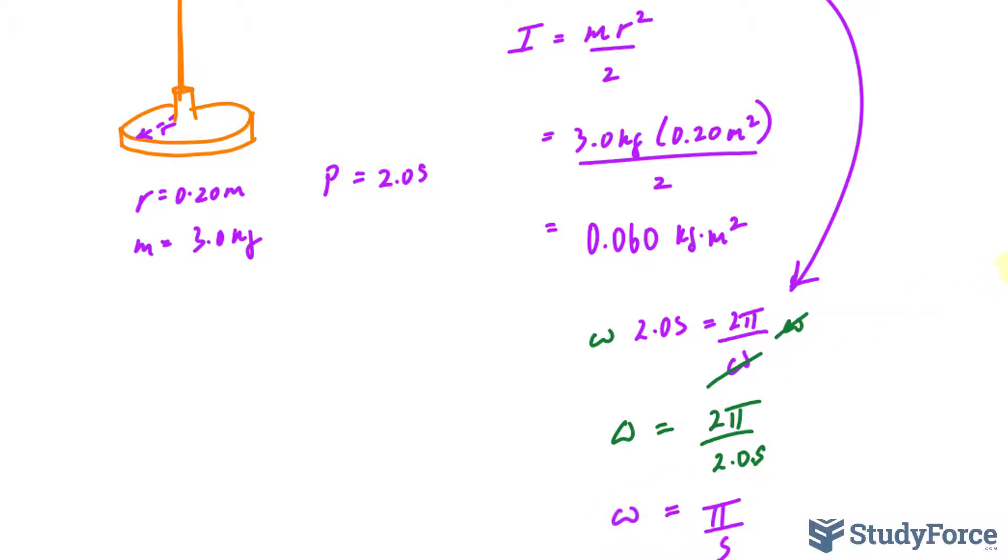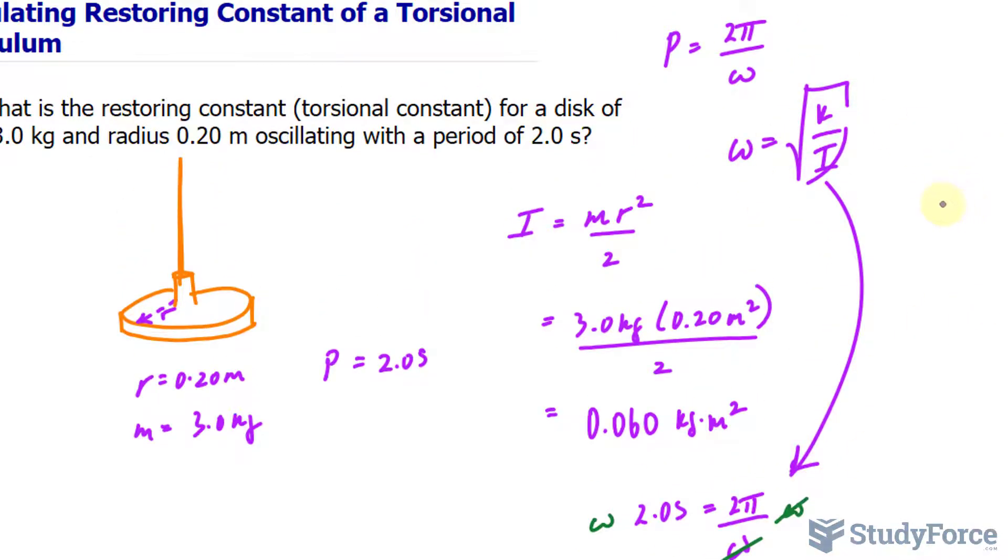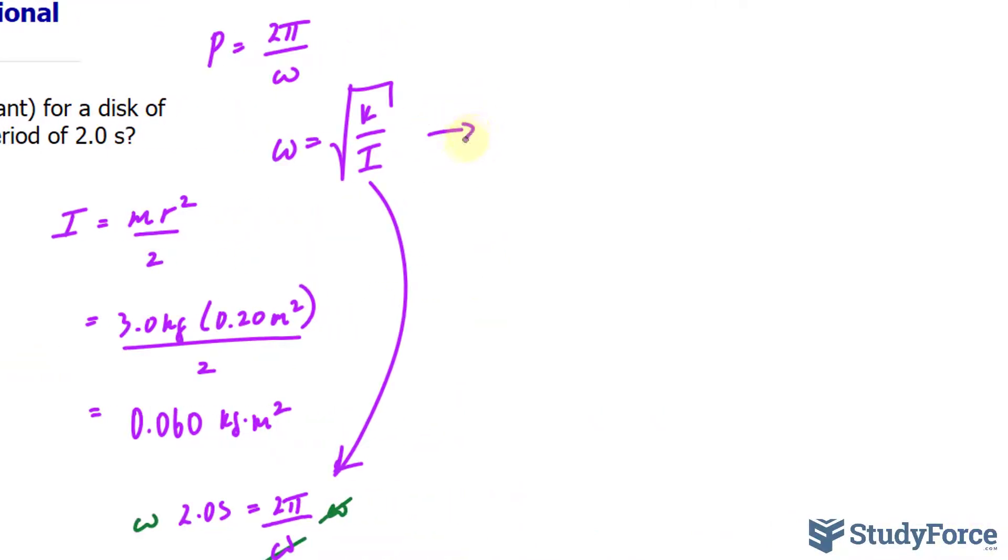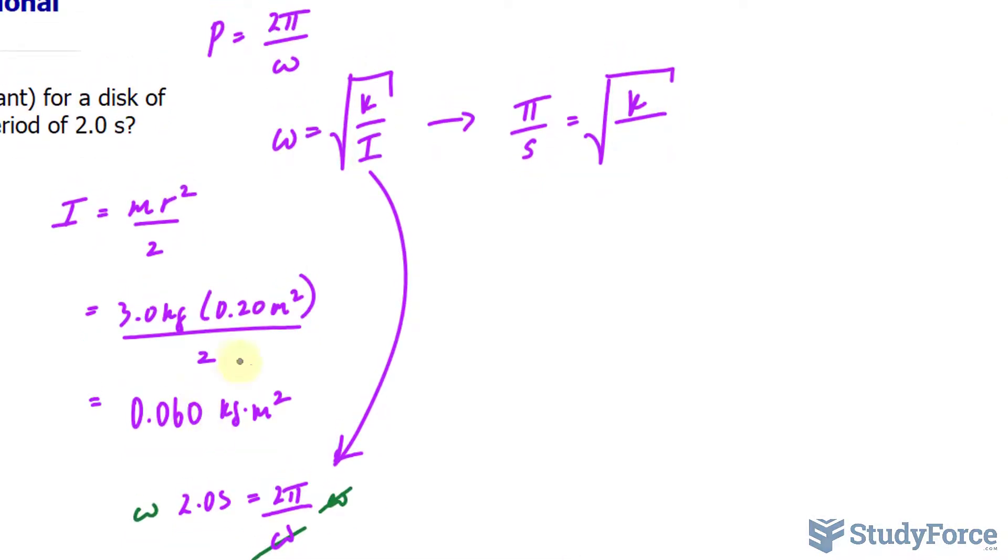I'll take this value now and put it into this formula. So, let me go ahead and do that. I have pi per second is equal to the square root of what we're looking for, k, over the moment of inertia, which I found to be 0.060 kilograms times meters squared.